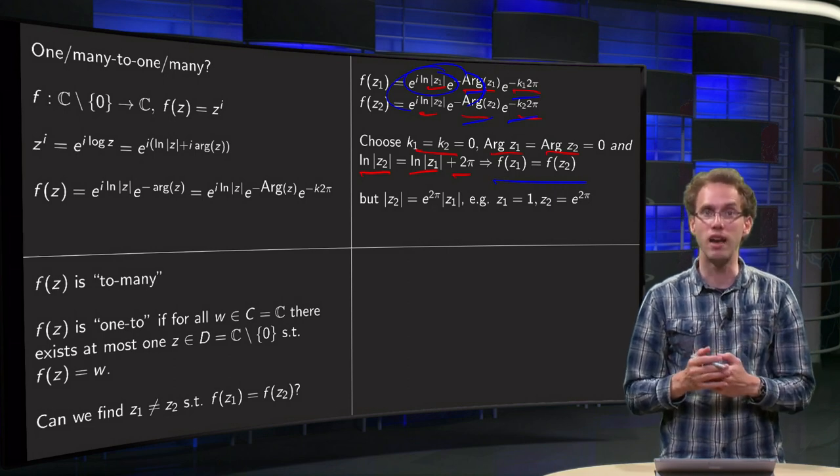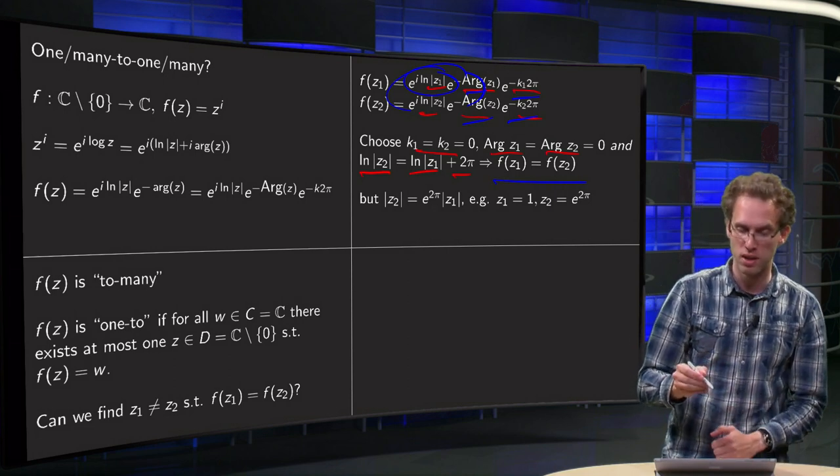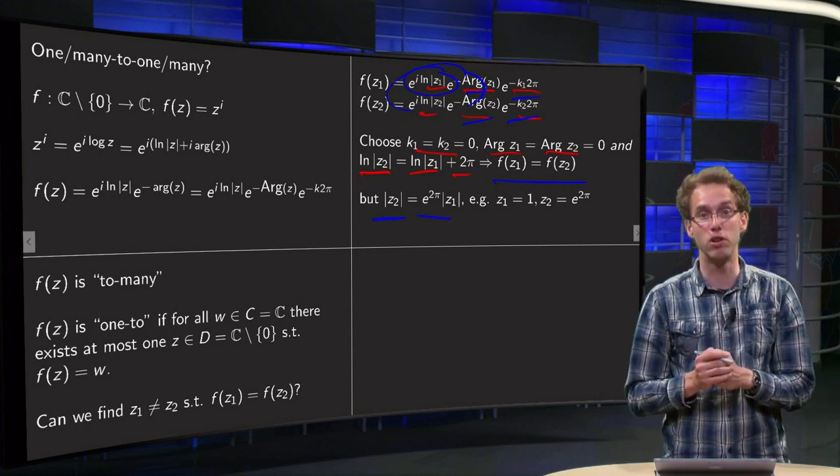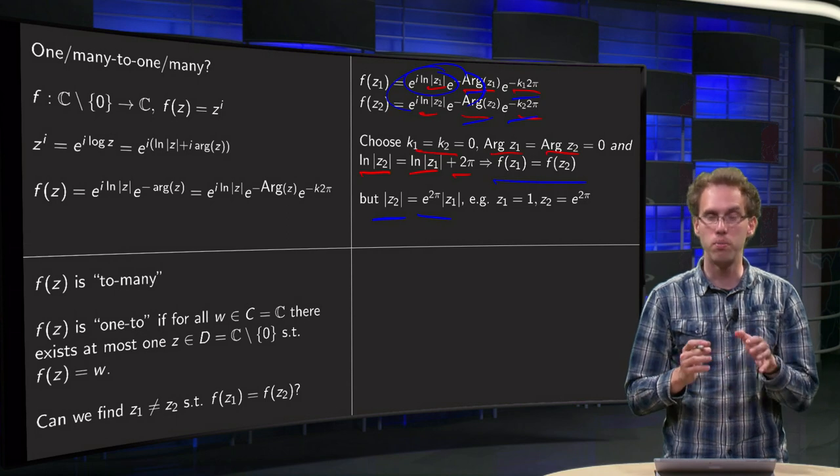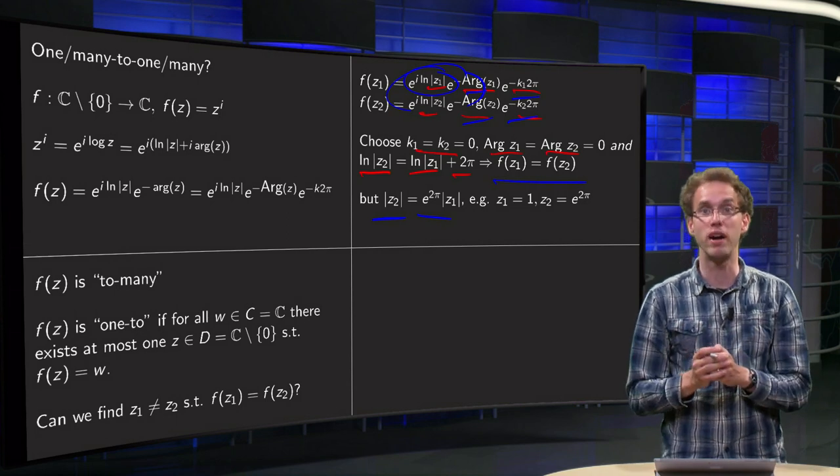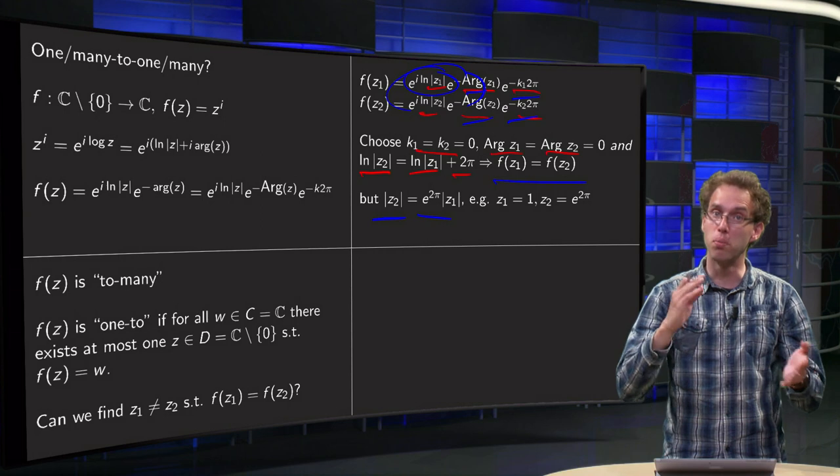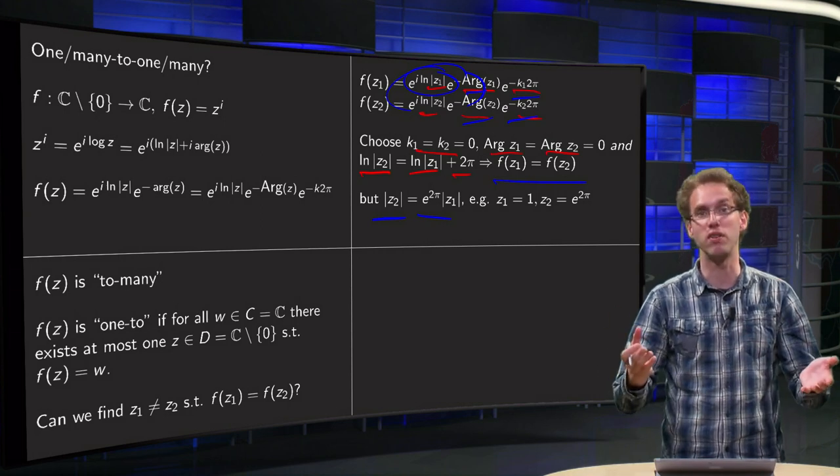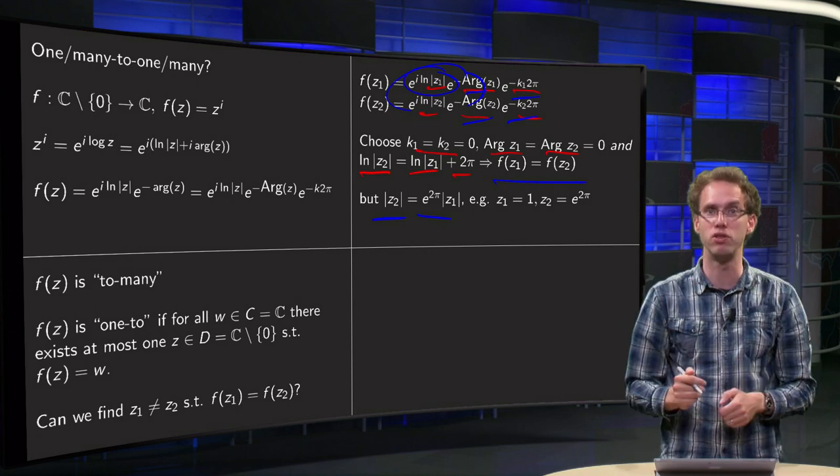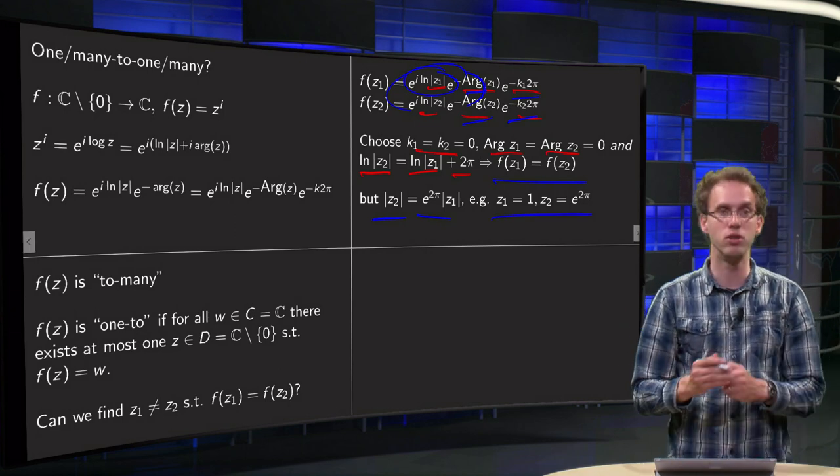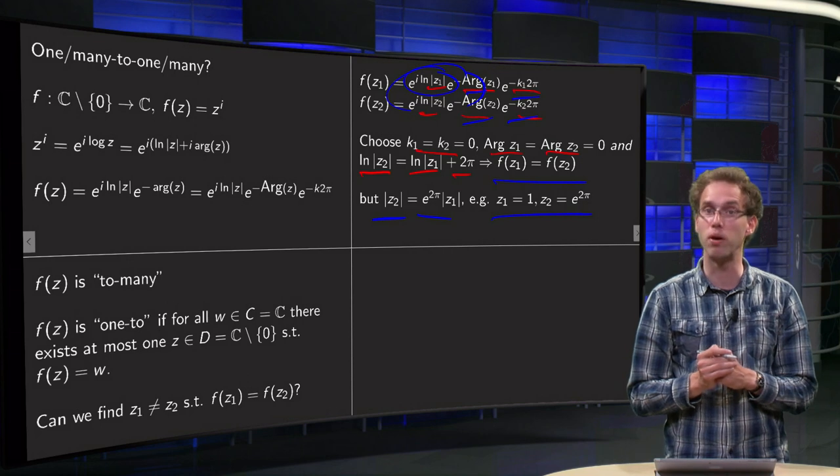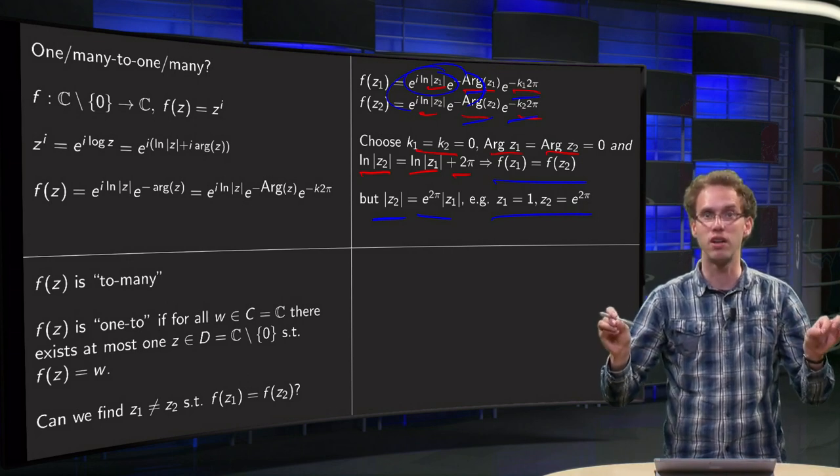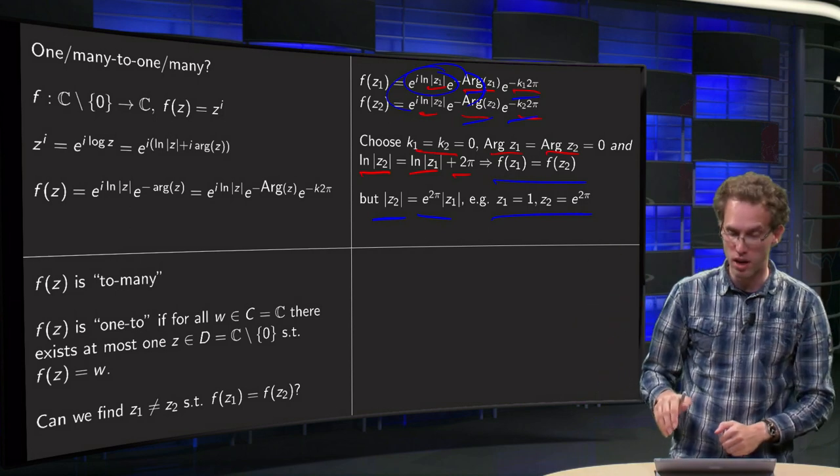But if we choose the ln of the moduli like this, that means |z2| = e^(2π)|z1|. That means the moduli of z1 and z2 are not the same, which means you have different z1 and z2 still mapping to the same function value. You can take, for example, z1 = 1 and z2 = e^(2π), and those two different values are mapping to the same value.